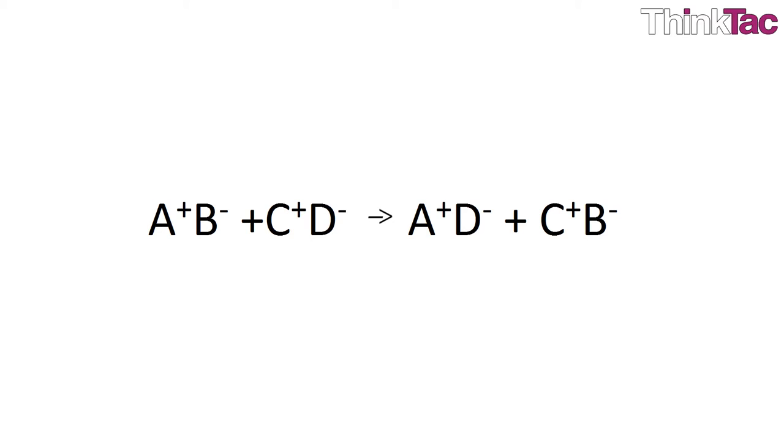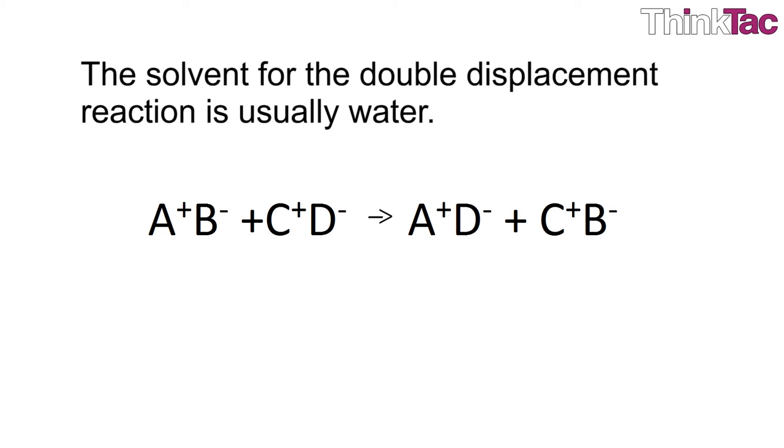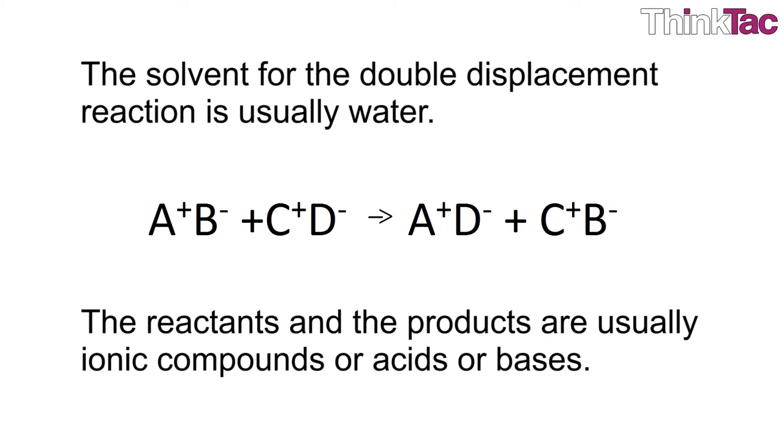This is essentially a swapping of cations and anions. The solvent for the double displacement reaction is usually water, and the reactants and the products are usually ionic compounds or acids or bases.